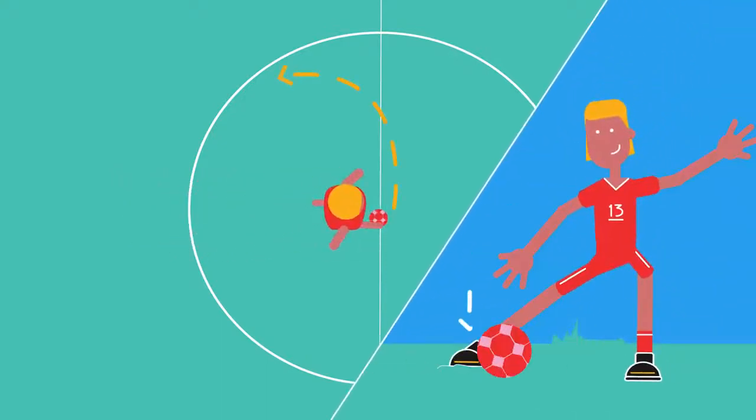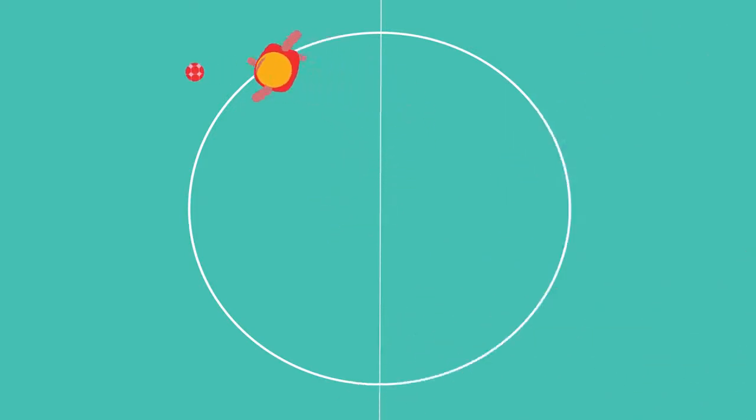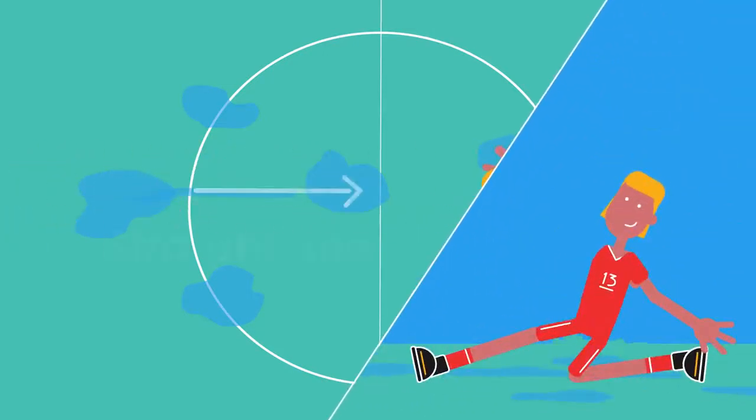To make this clear, think of a football player trying to turn. She digs her foot into the ground to provide the force to enable her to change direction. If the ground is very wet, her foot slips and she carries on in a straight line in a skid.